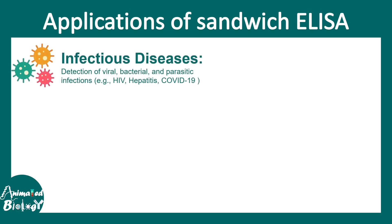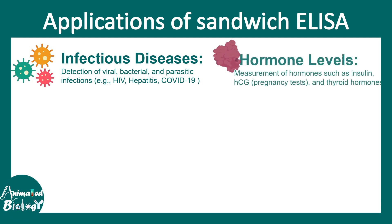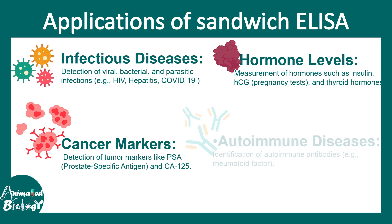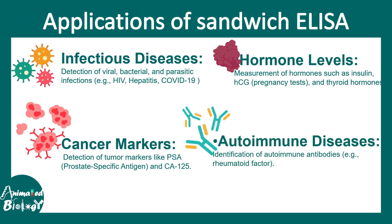Given its high sensitivity, sandwich ELISA has multiple clinical applications. It is used to detect infectious diseases such as HIV, hepatitis, and COVID-19. It can detect hormone levels such as thyroid hormone or hCG. It can also detect cancer biomarkers — for example, prostate-specific antigen in prostate cancer — and autoimmune antibodies in autoimmune diseases.